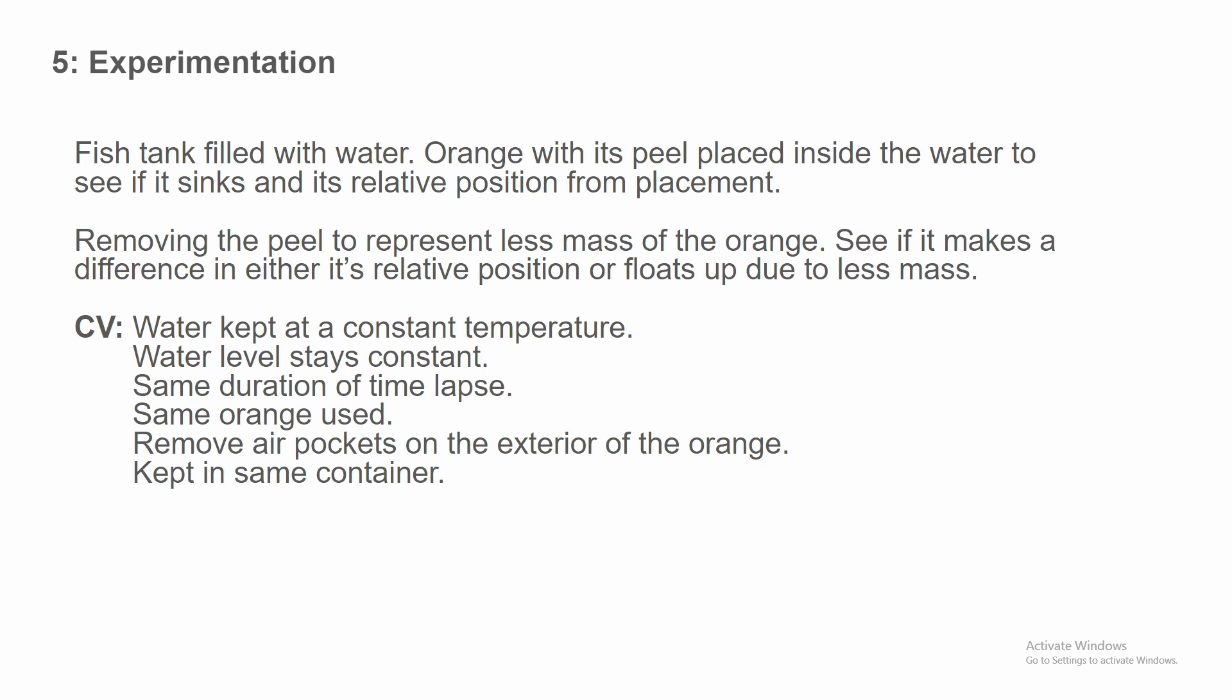Experimentation. Fish tank filled with water. Orange with its peel placed inside the water to see if it sinks and its relative position from the placement. Removing the peel is to represent less mass of the orange. See if it makes a difference in either its relative position or floats up due to less mass. So in other words, we stick the orange in the water with its peel. It has more mass. If we remove the peel, it now has less mass. The control variables, CV. These are the things that you keep controlled to know that you are keeping a controlled environment for your experiment. The controlled variables in this experiment are: Water is kept at a constant temperature. Water level stays constant. Same duration of time lapse. The same orange was used. Remove air pockets on the exterior of the orange so there wouldn't be any air bubbles holding the orange up to give a null result. And it's kept in the same container.